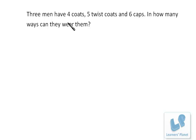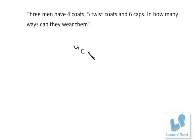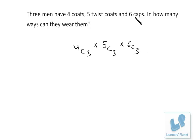Let's take this problem: three men have four coats, five twist coats, and six caps — in how many ways can they wear them? Since there are three persons, each requires one of each item. We need to select three coats out of four, so it's 4C3. Similarly, each will require one twist coat, so it's 5C3, then 6C3 — meaning three caps will be selected out of six. Till here we have made the selection of three coats, three twist coats, and three caps.